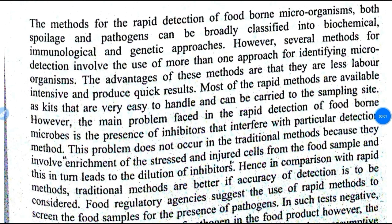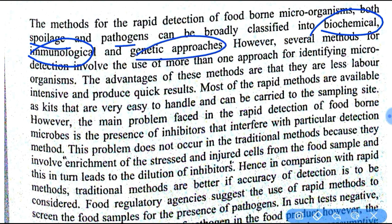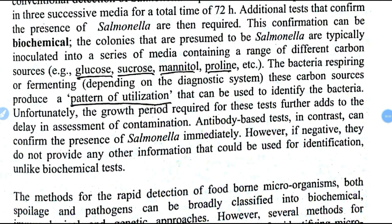The methods for rapid detection of foodborne microorganisms — both spoilers and pathogens — are classified into biochemical, where we use some chemicals to identify the foodborne microorganisms; immunological, where we use some antibodies; and genetic approaches, where we do gene amplification or use PCR technology. Some methods also apply more than one technology, such as biochemical plus genetic, or genetic plus immunological. Additional tests which confirm the presence of Salmonella or any other microbiological agents are done by the help of a pattern of utilization.